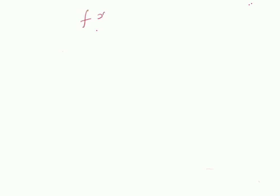Hello, welcome. In this short video, let us look at the application of maximum likelihood estimation to the exponential distribution. The probability density function of an exponential variable x_n is given by f(x_n) = lambda times e to the power of minus lambda x_n, where lambda is the parameter of the density function.